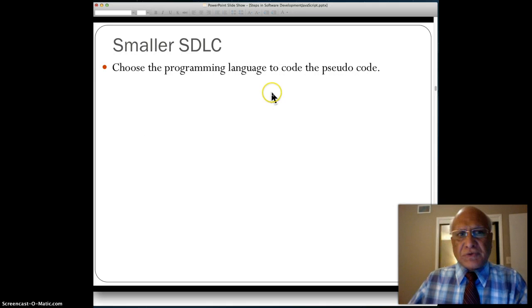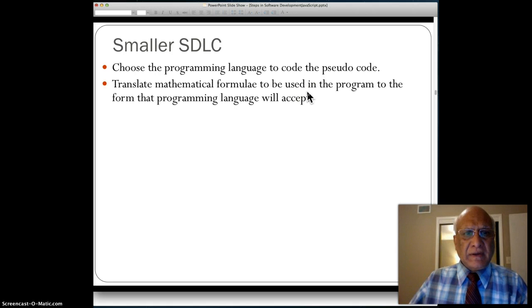Then you choose the programming language to code the pseudocode, convert pseudocode into source code. After choosing a programming language, you need to translate the mathematical formulas to be used in the program to the form the programming language will accept. Then you will have to line by line translate pseudocode to source code.